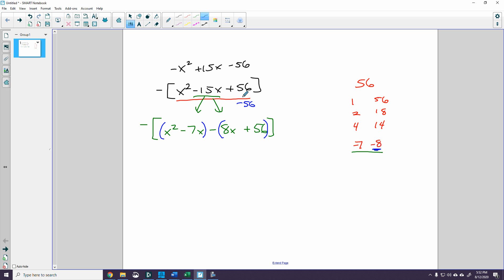But as you can see, I need it to be plus 56. So what I need to do is I need to change this plus sign here into a negative sign. Now I have negative 8x, and negative times a negative is a positive. I still have my positive 56.